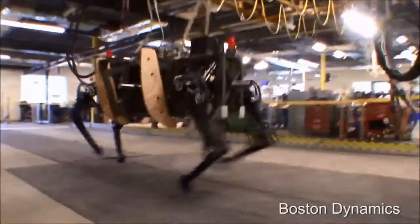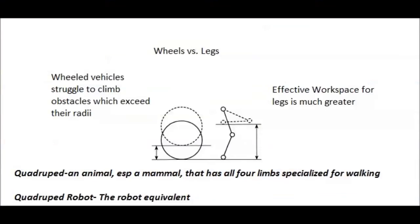This is Alpha Dog from Boston Dynamics, a robot which mimics quadrupeds, or mammals which have four legs made for walking.